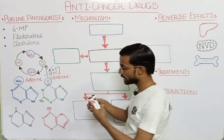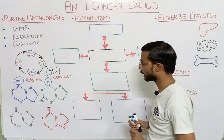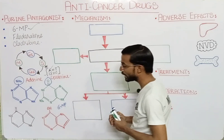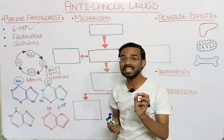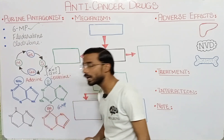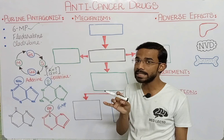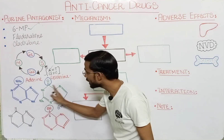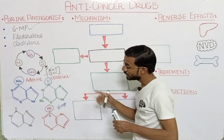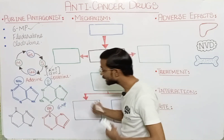Now we will discuss 6-mercaptopurine. Here you can see the structure of 6-mercaptopurine. Why do we call it 6-mercapto? Mercapto is basically a functional group having an SH group, which is called mercapto or thiol. This functional group is present at the 6th position of the ring, so that's why it is called 6-mercapto. The structure is similar to the purine ring, so it's called 6-mercaptopurine. By changing the functional group from the purine, it becomes an antagonist.